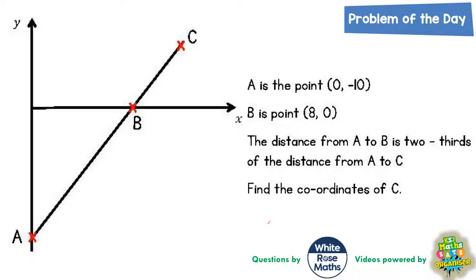Welcome problem solving fans for another problem of the day, and this one is all about coordinates. It says A is the point (0, -10), B is the point (8, 0), and the distance from A to B is two-thirds of the distance from A to C. Find the coordinates of C.